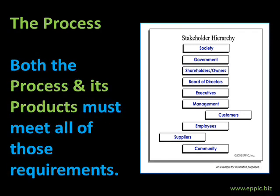The process must meet both the requirements for the processes themselves and for its products. Sometimes the stakeholders care about the process and whether you're violating child labor laws, as one example. But sometimes they don't care about how you created the product via the process. They simply care about the products. Are the products safe for children?